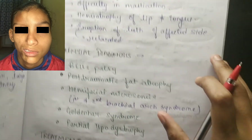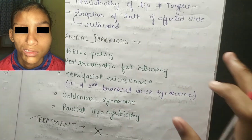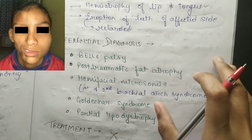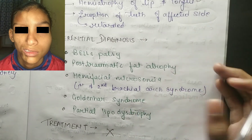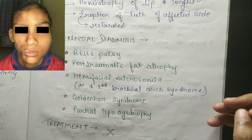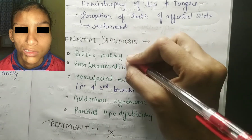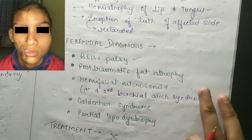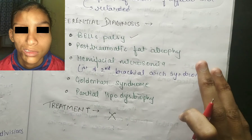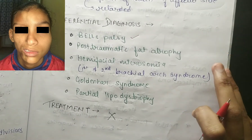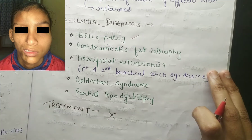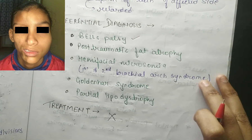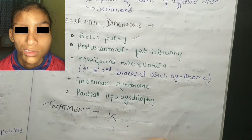There is severe facial asymmetry and facial deformities, with difficulty in mastication, and hemi-atrophy of the lip and tongue. Eruption of teeth on the affected side is very late. Clinicians can sometimes confuse this condition with Bell's palsy and facial hemi atrophy.